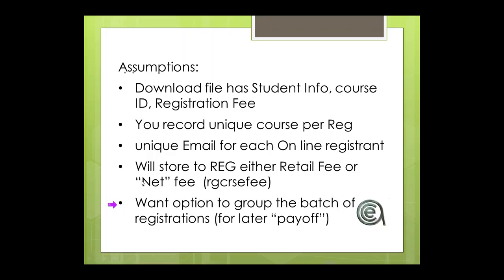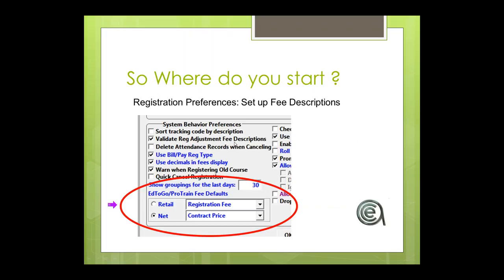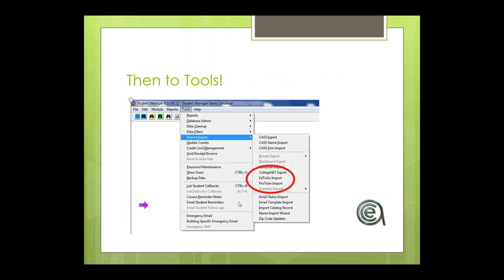This starts with a new function under Registration Preferences where you can identify the name of the fee you're going to apply to this online course vendor, and the fee you'll apply to the registration for that class. You'll be able to set a preference for which fee description — retail or net — goes into the registration record.